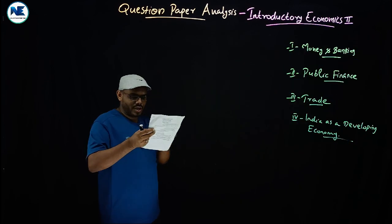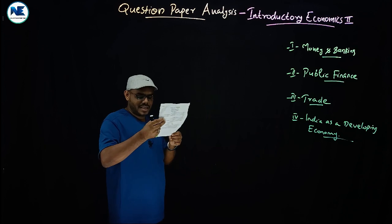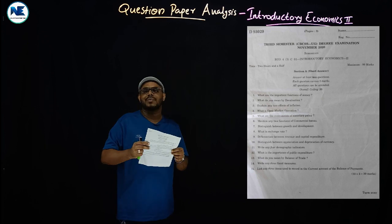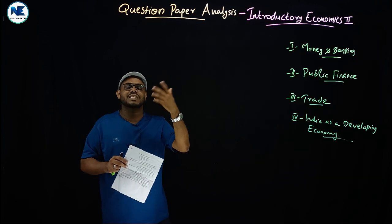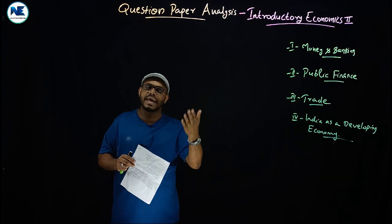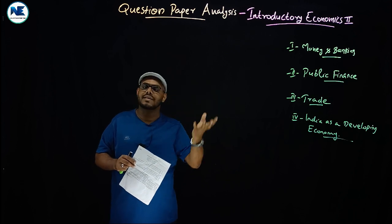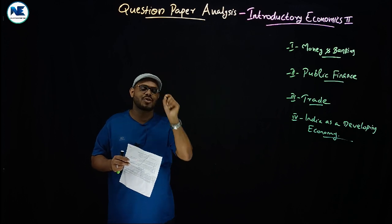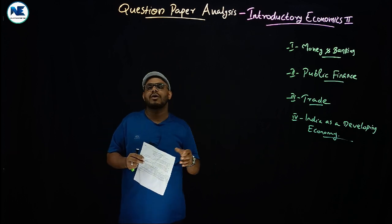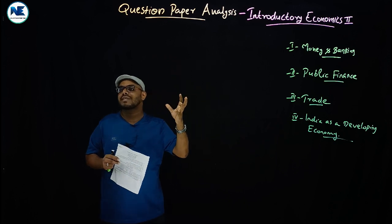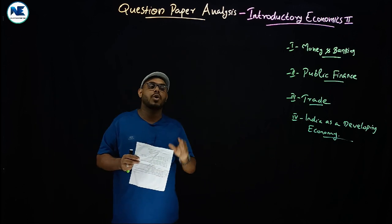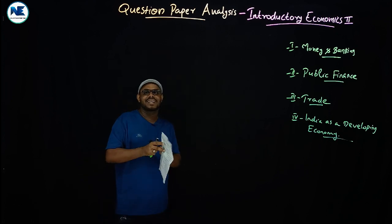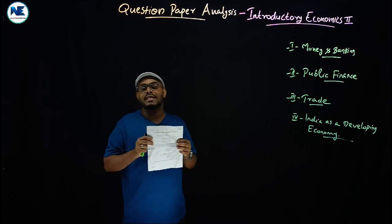The fifteenth question: list any three items usually recorded in the current account of the balance of payments. Current account items include export of goods, export of services, gifts, aid, interest receipts, interest payments, and profits. The capital account records loans, investments, borrowings, repayment of borrowing, and lending of money.